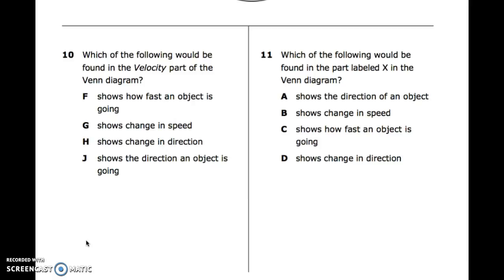Number eleven: which of the following would be found in the part labeled X in the Venn diagram? A: shows the direction of an object. B: shows change in speed. C: shows how fast an object is going. D: shows change in direction.